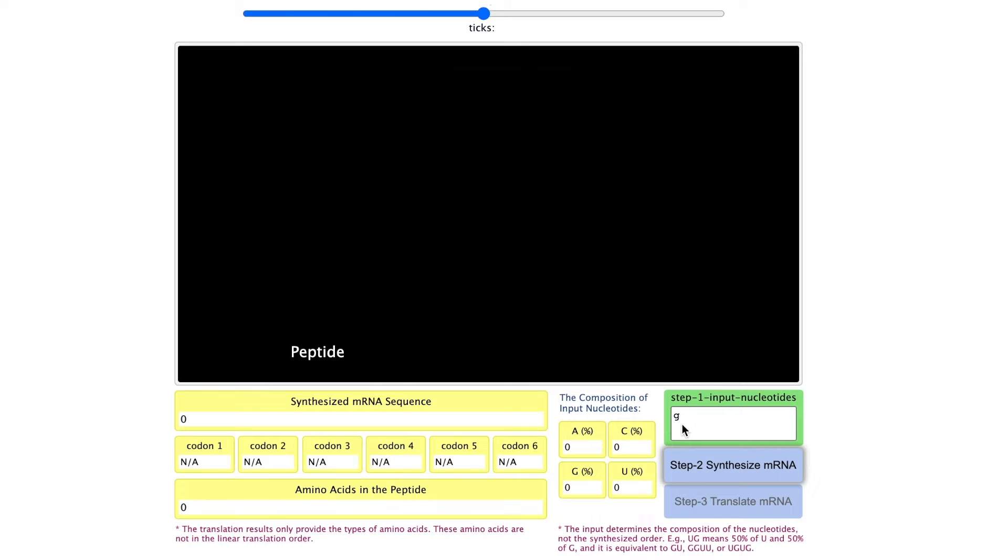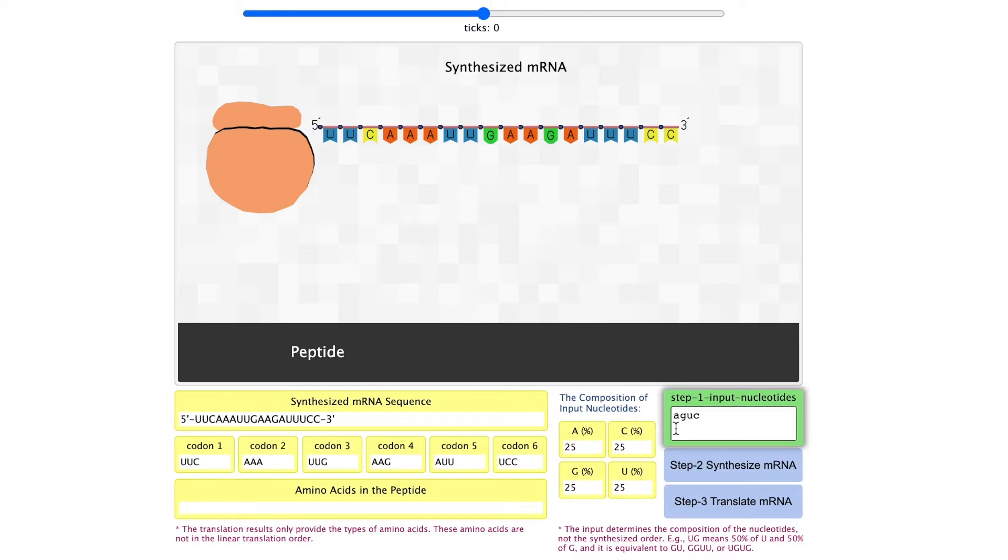There are only three steps to use the model. First, input the nucleotides. You can only put in A, C, G, U, the four RNA nucleotides. It doesn't matter in which order you put in these nucleotides. Only the type and the ratio of these nucleotides will influence the mRNA synthesized.